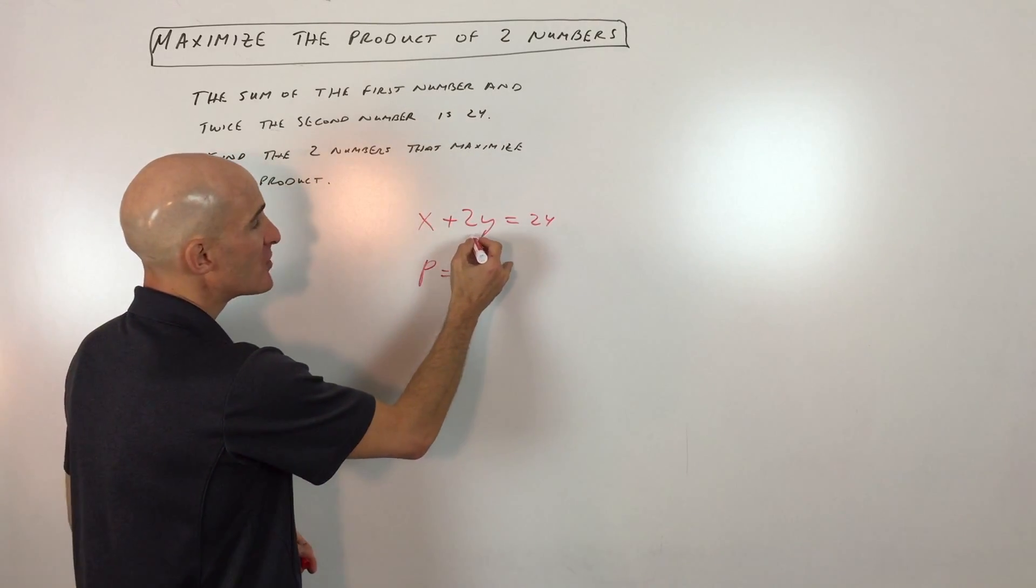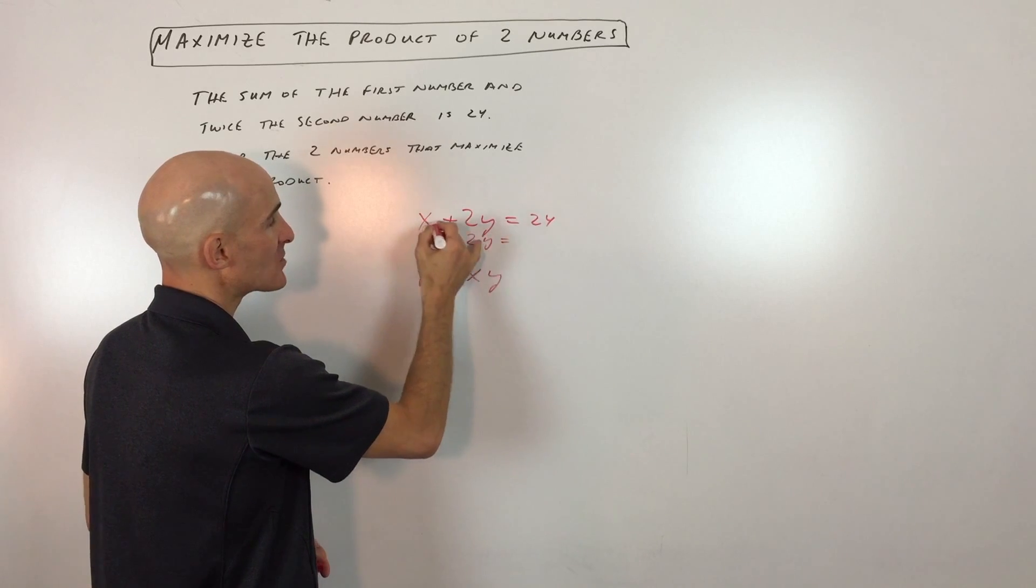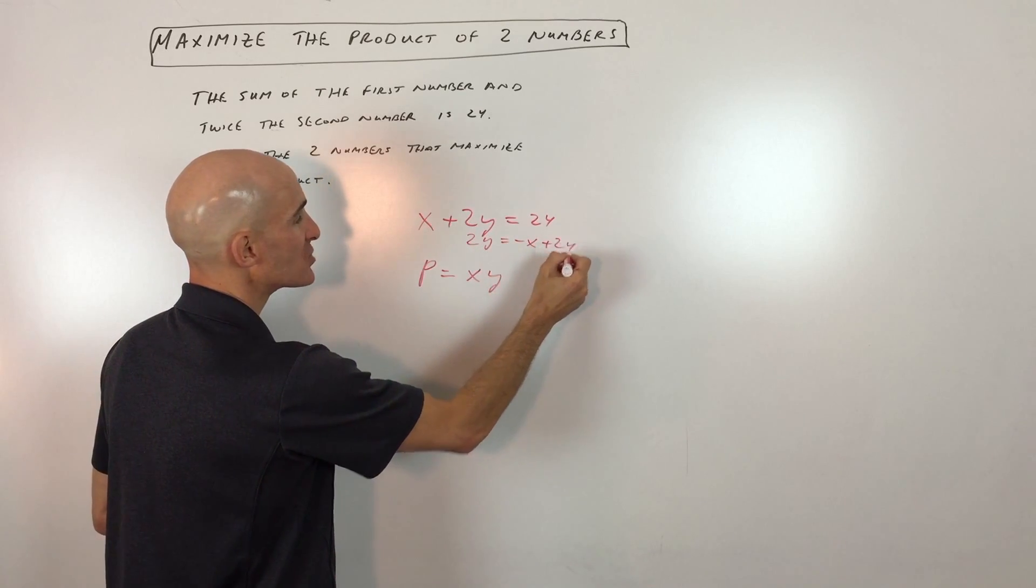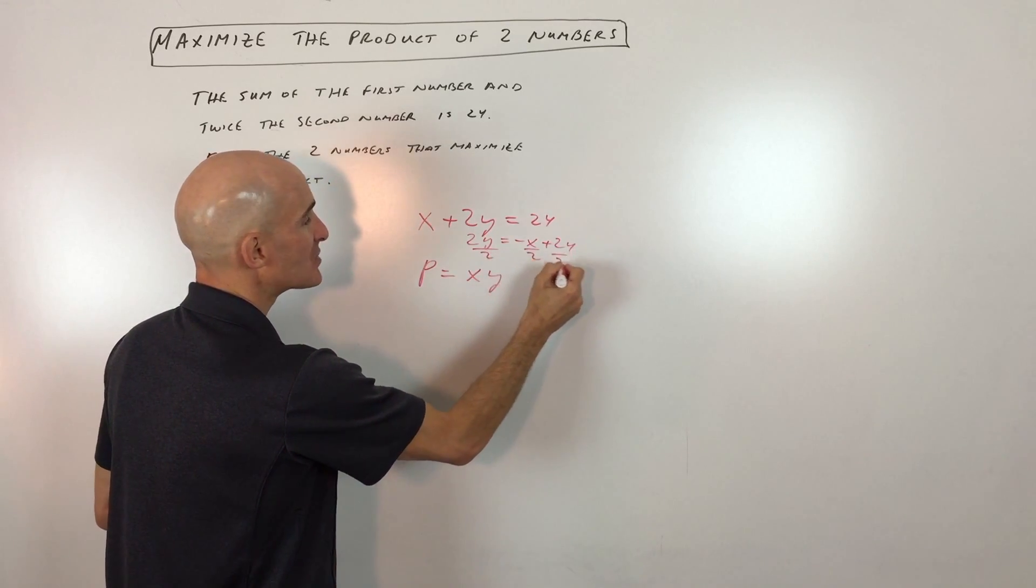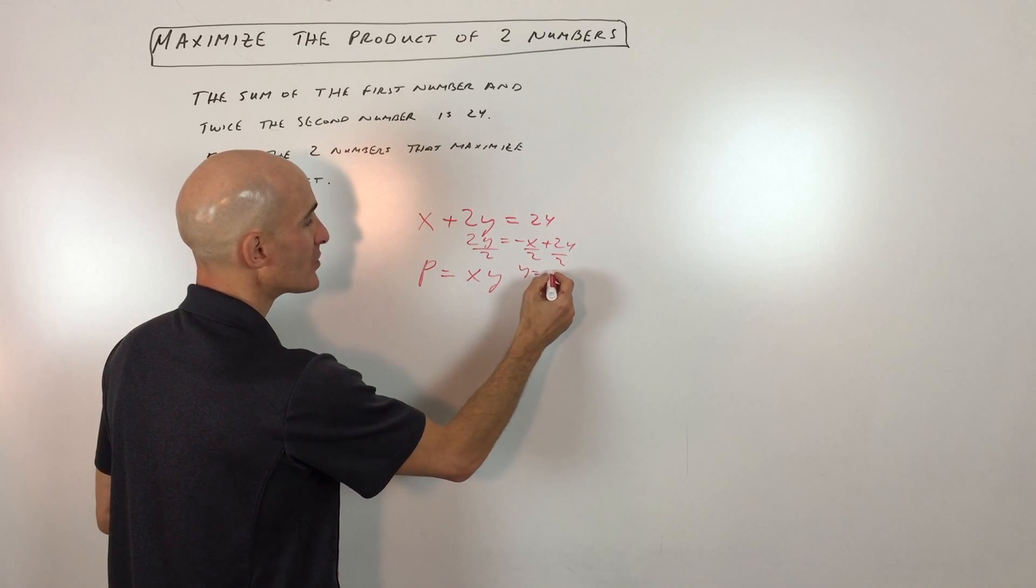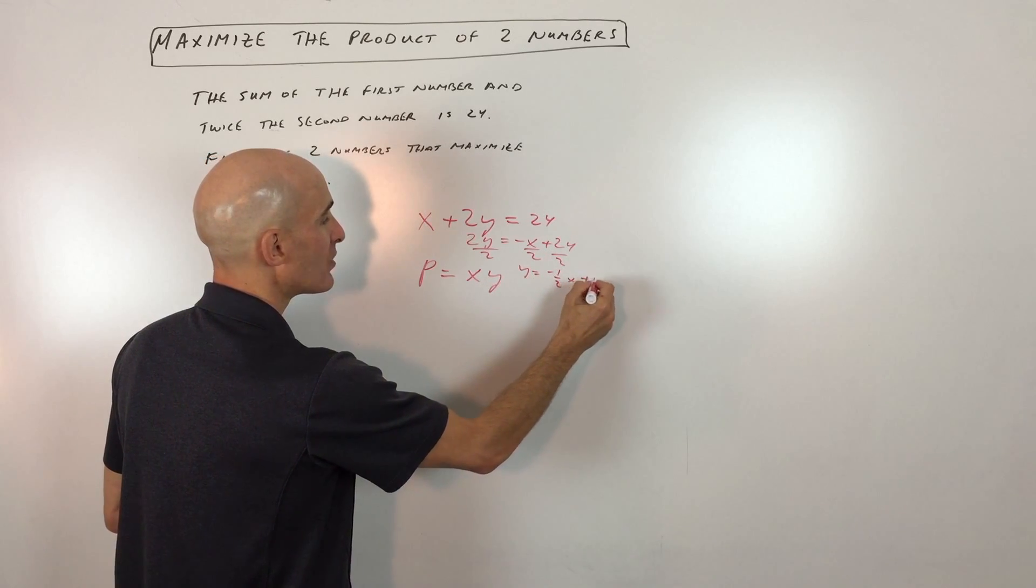So the way we're going to do that is solve for y in terms of x. I'm going to subtract x from both sides of the equation and divide everything by two. If I do that, you can see that I'm getting y equals negative one-half x plus 12.